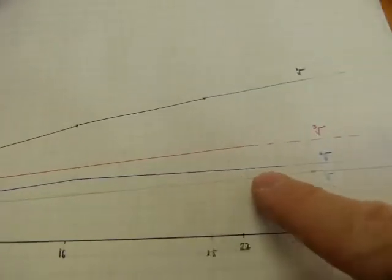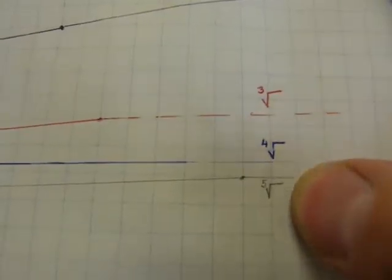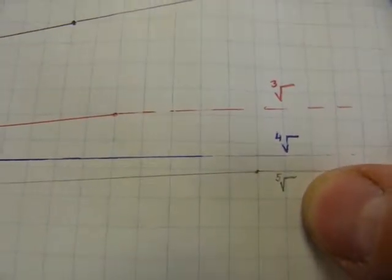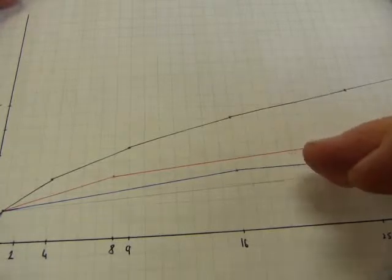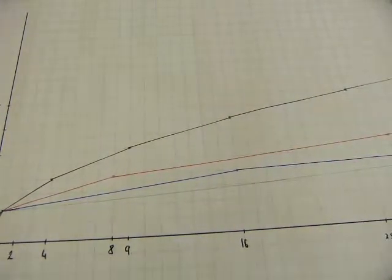This blue line is the fourth root of things. And the pencil line represents the fifth root of numbers. So you have square roots, cube roots, fourth and fifth roots of things.